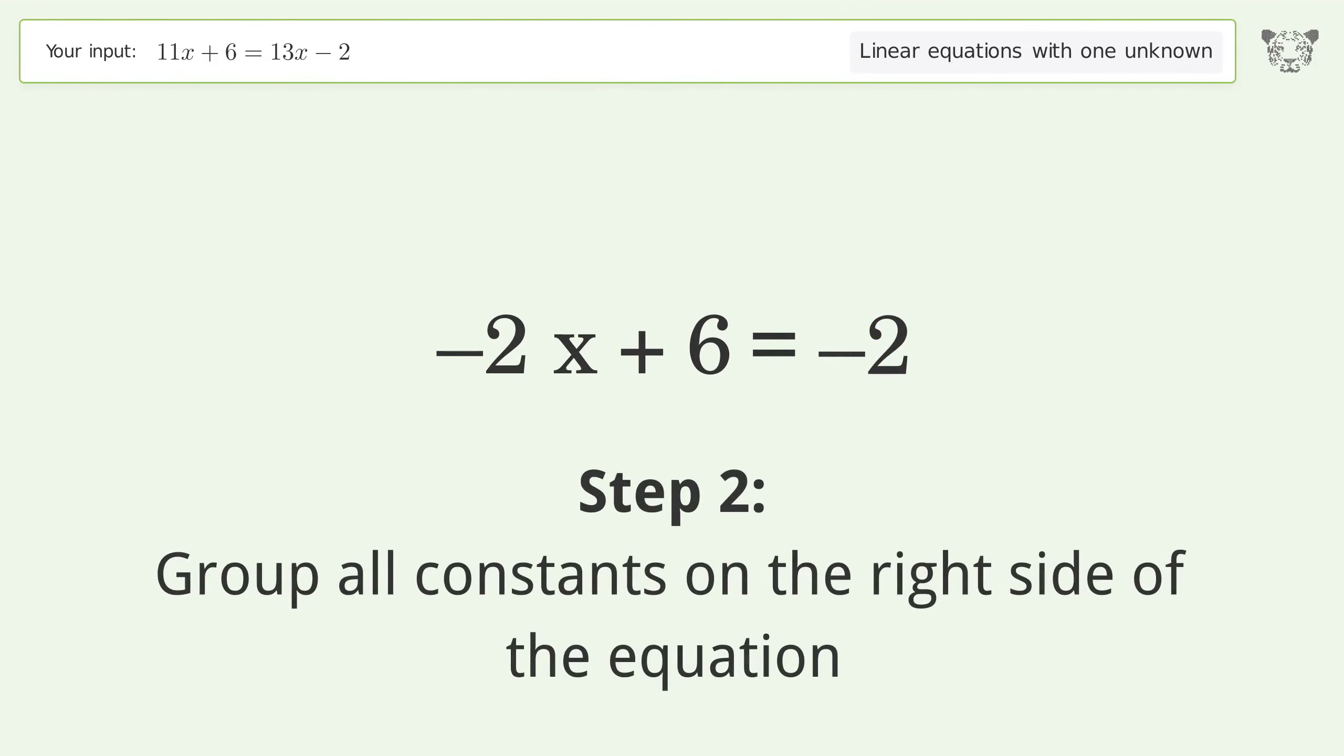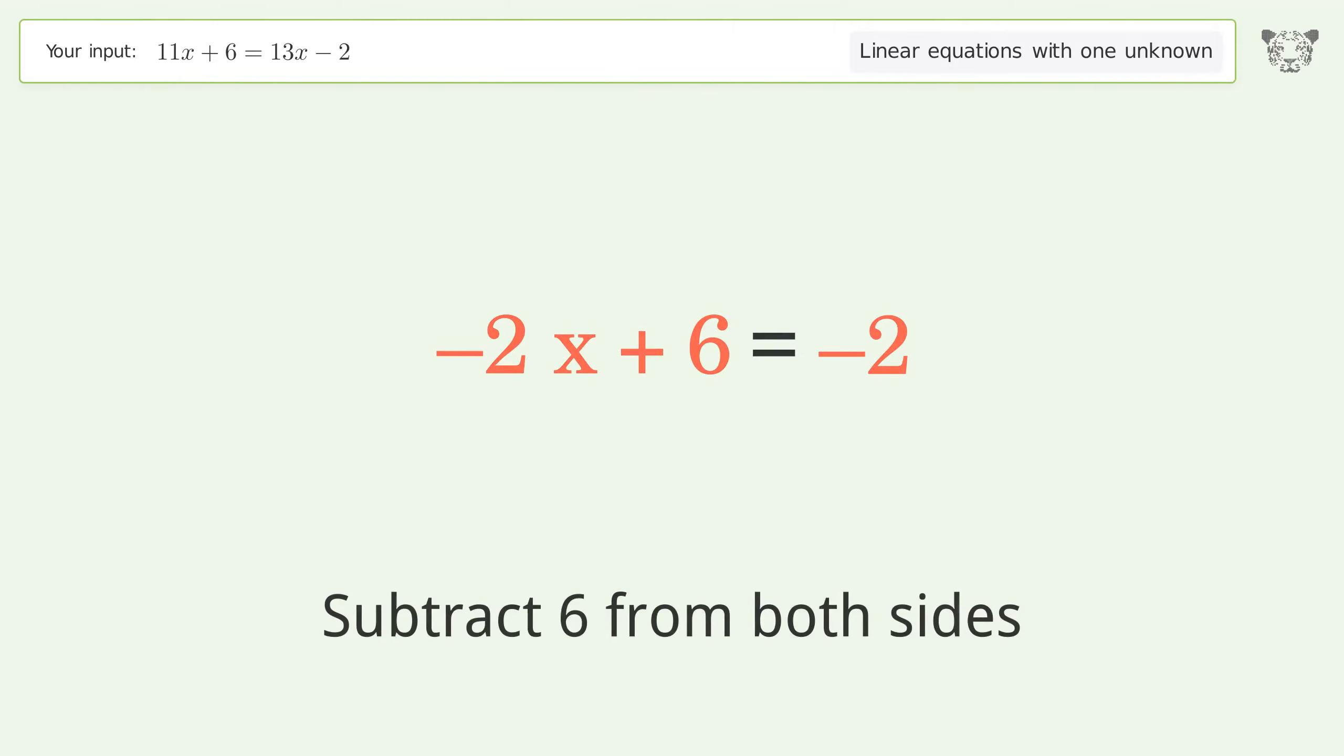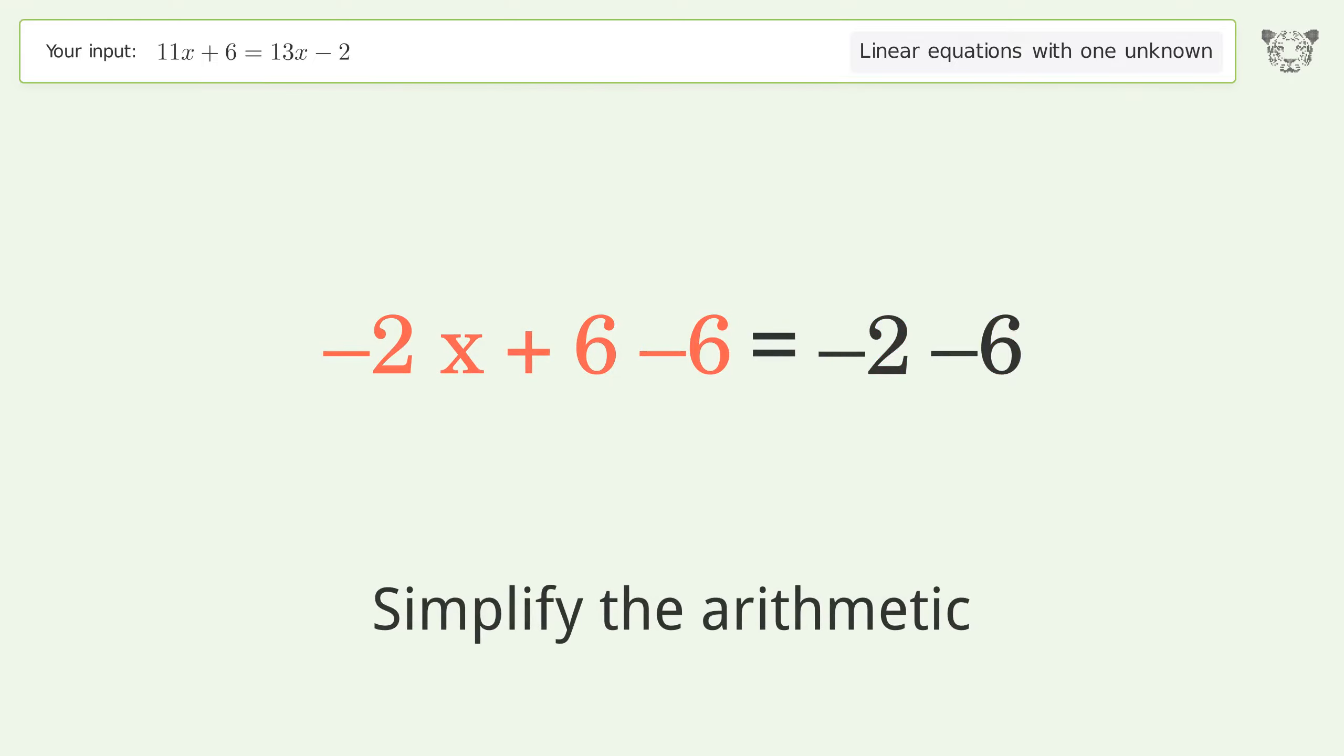Group all constants on the right side of the equation. Subtract 6 from both sides. Simplify the arithmetic.